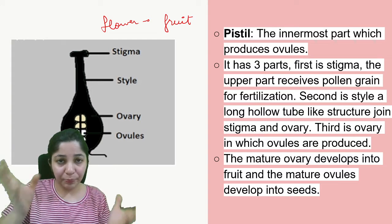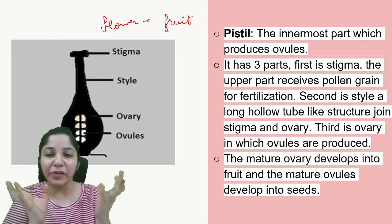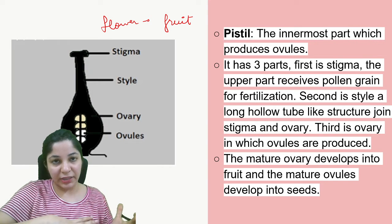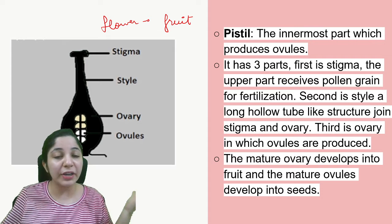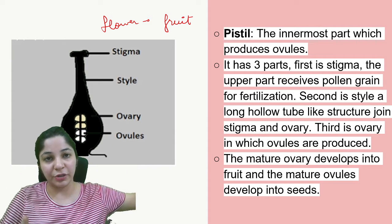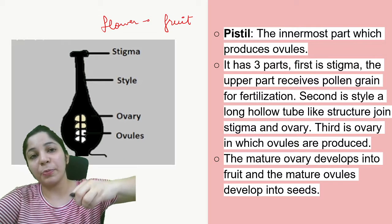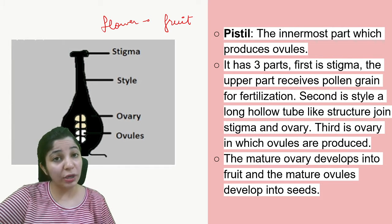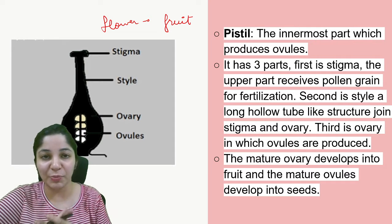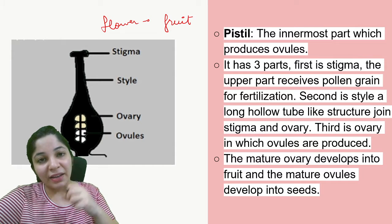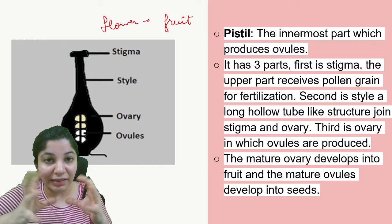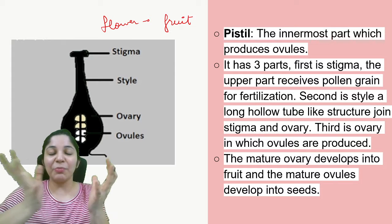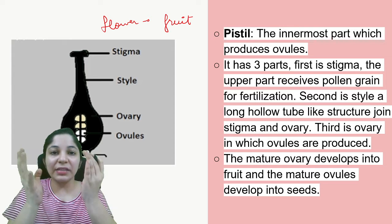Sometimes a single flower has both male and female reproductive organs, and the pollen grains directly reach the stigma. Other times, flowers have separate male and female reproductive organs, and the pollen grains have to be transferred from male to female organs — that is what pollination is about. Bees and insects are responsible for pollination. They stick the pollen grains with their legs when they approach the flower for nectar, carry the pollen grains, and then drop them onto the stigma, where fertilization takes place.